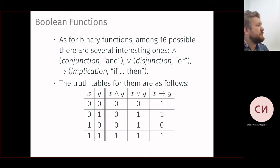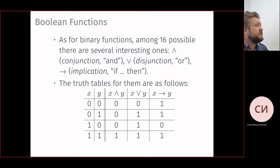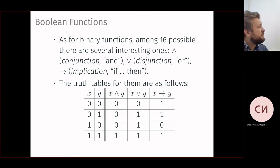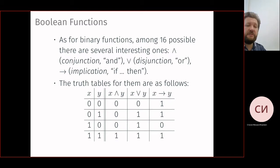Let's look at the truth table for implication — it may be the most interesting one. From a false premise you can imply anything: if x is zero, then x implies y is true regardless of y. The only situation where implication is false is when the premise is true and the conclusion is false. Conjunction is true only if both are true; disjunction is true if at least one is true.